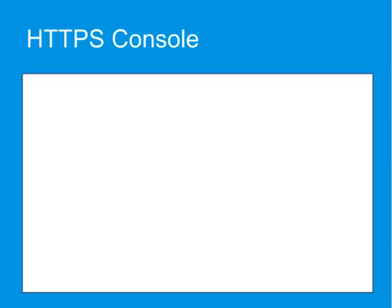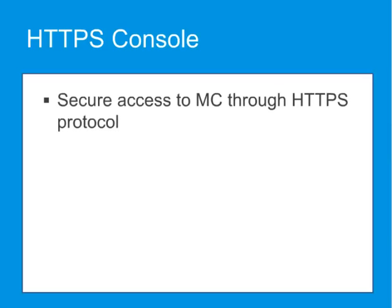The HTTPS console provides secure access to the management console through the HTTPS protocol. Creating a new HTTPS console port requires three steps: selecting a keyring. The ProxySG ships with a default keyring that can be reused with each secure console that you create. You can also create your own keyrings.